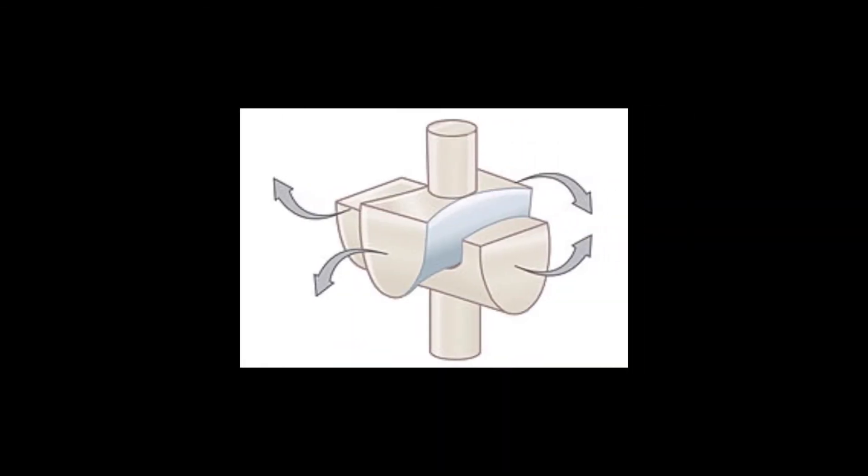Now moving on to saddle joints. Now saddle joints are unique because they can move from side to side and they can also move back and forth. There are only two pairs of joints that fall underneath this category, one of them being the first carpometacarpal joint.